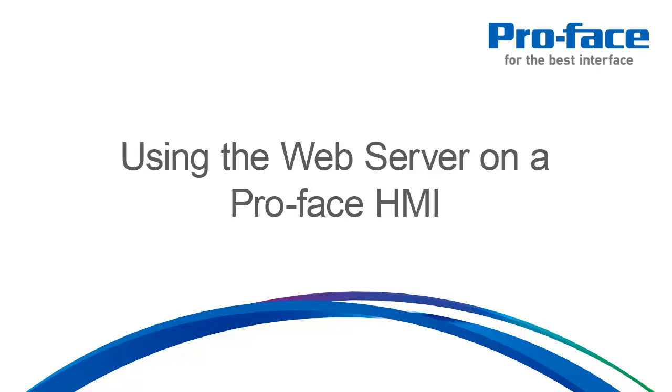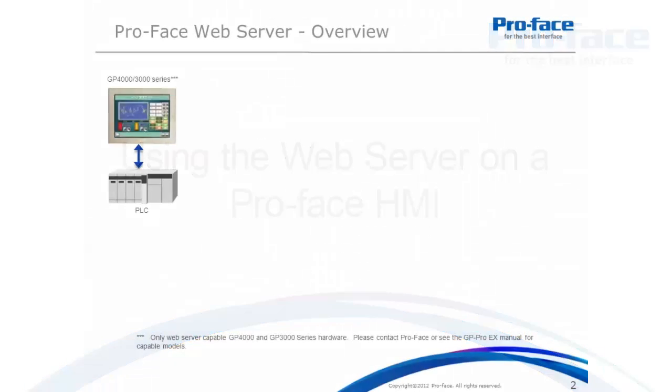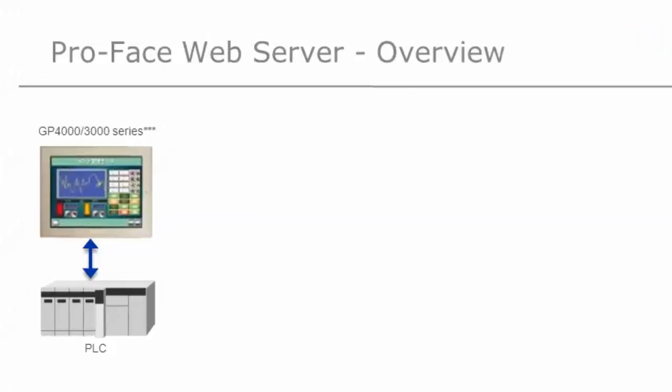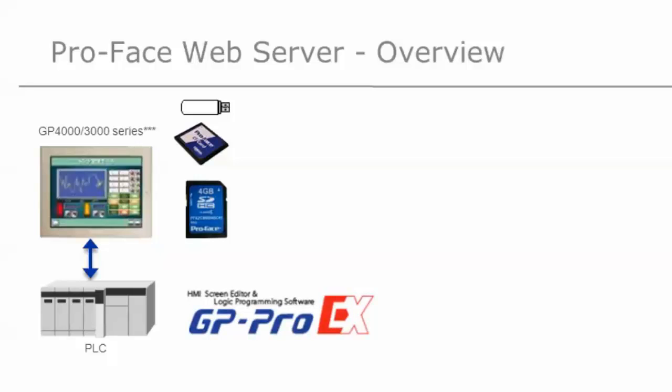We'll begin with a GP4000 or GP3000 series HMI — Human Machine Interface — connected to one or more PLCs or devices. We ensure we have either a USB stick, CF card, or SD card connected to the HMI. Your options will depend on your model of ProPhase HMI being used. The web server data will reside on the media you have inserted. Configuration and download of the web server is performed using ProPhase's HMI development software, GP Pro EX.